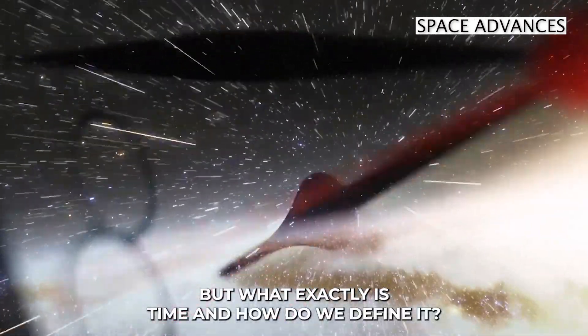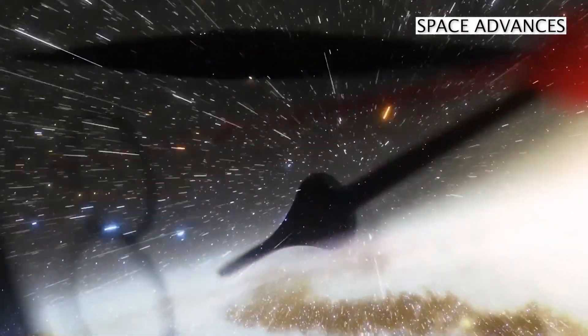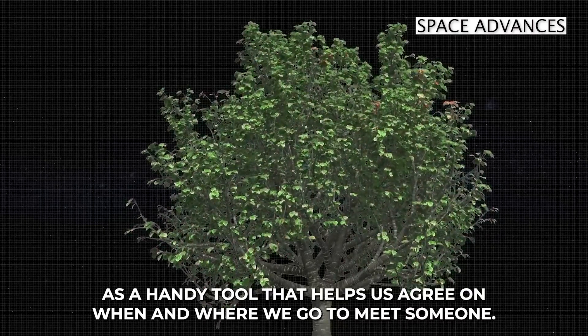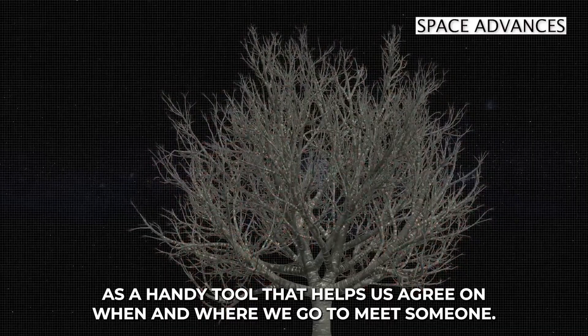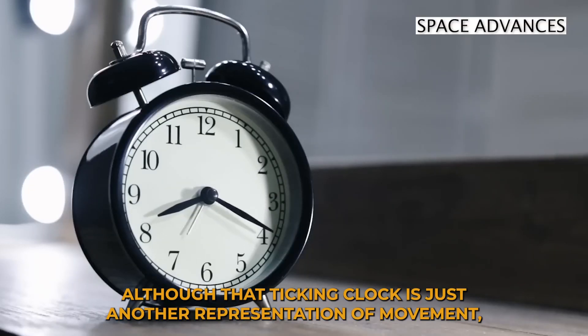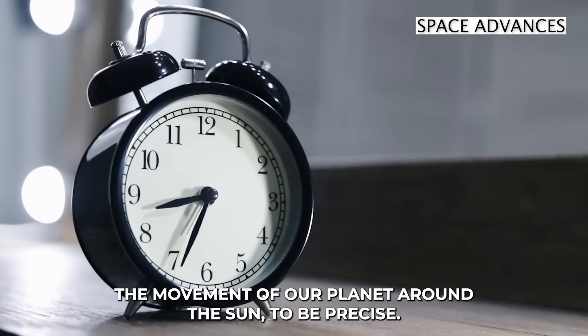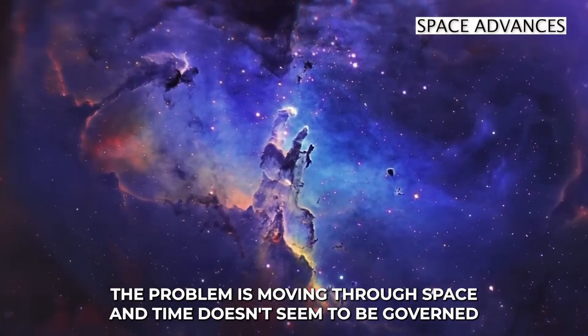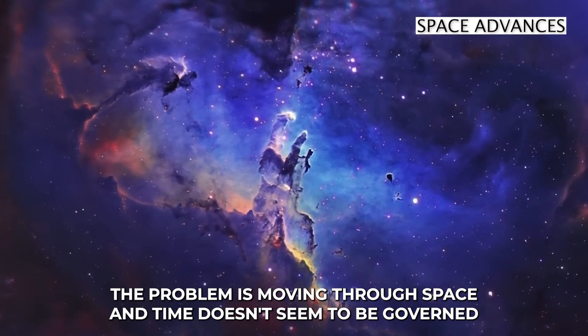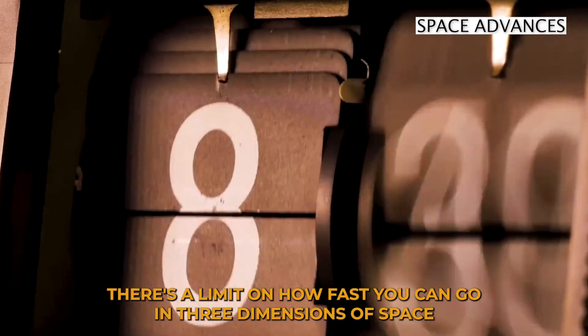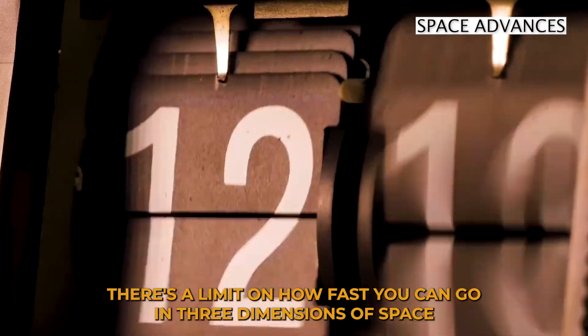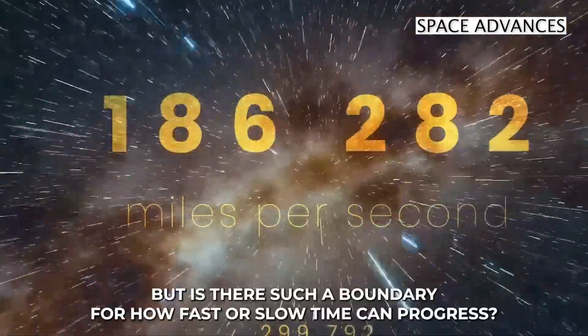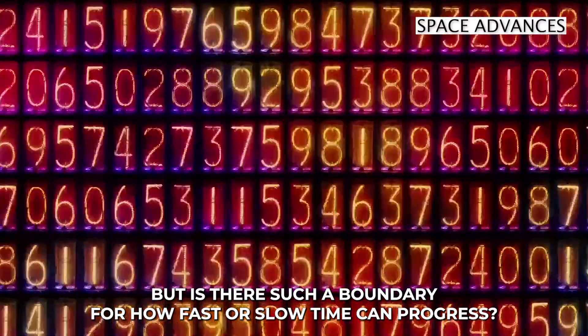But what exactly is time, and how do we define it? When we think of time, we imagine the changing of the seasons, or see it as a handy tool that helps us agree on when and where we're going to meet someone. Although that ticking clock is just another representation of movement, the movement of our planet around the Sun, to be precise. The problem is, moving through space and time doesn't seem to be governed by the same rules. There's a limit on how fast you can go in three dimensions of space, and that's 186,282 miles per second. But is there such a boundary for how fast or slow time can progress?